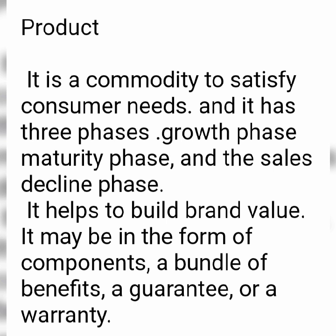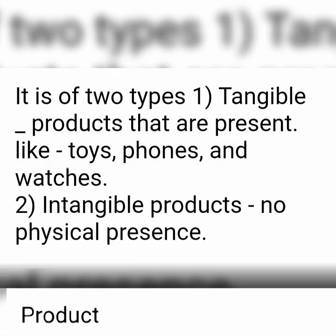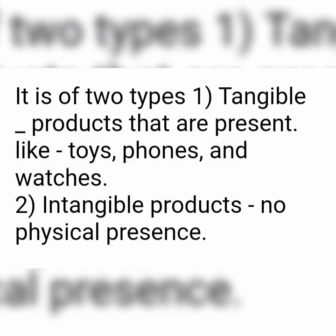The first one is Product. It is a commodity to satisfy consumer needs and it has three phases: growth phase, maturity phase, and the sales decline phase. It helps to build brand value. It may be in the form of components, a bundle of benefits, a guarantee or a warranty.